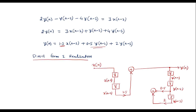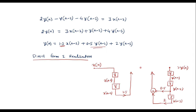0.5y(n-2) plus 2y(n-3) should be added with 1.5x(n-2) using one more adder. These two adders can be replaced by a single adder — that will be the same. So this is the direct form 1 realization.